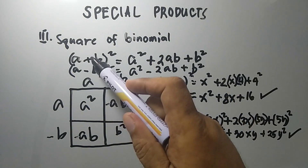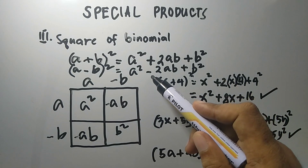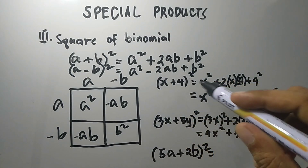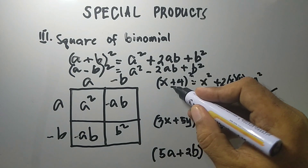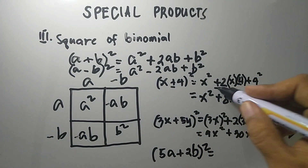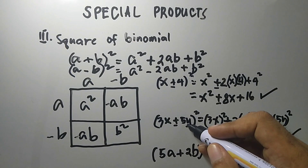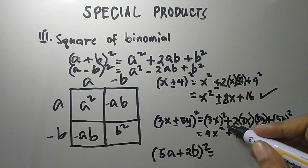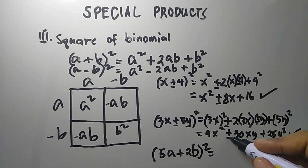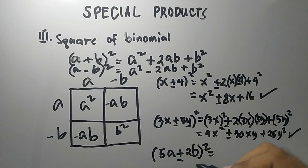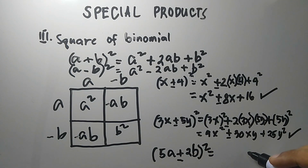The difference between the two cases is only the sign — the negative is only in the middle term. So in our example, if this is x minus 4, the middle term will be negative. And if this is 3x minus 5y squared, the middle term will also be negative. So if we have 5a plus 2b or 5a minus 2b, the square of that: if the binomial is negative, the middle term becomes negative; if it is positive, the middle term becomes positive.